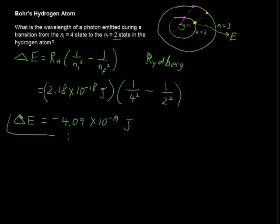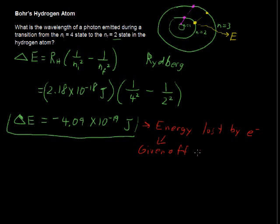Now, this is the beginning of our problem. We needed to find that, and notice that that is energy lost by the electron. And energy lost by the electron is given off in the form of the energy in the photon. So, lost by the electron, and then it is given off as a photon.